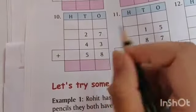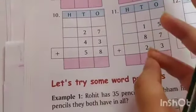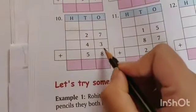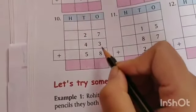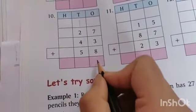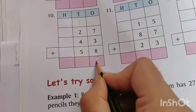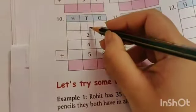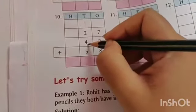10, 11, 12, 13, 14, 15, 16, 17, 18. So 10 plus 8 is 18. So 1 as carry to the tens column and 8 we write in the ones column.